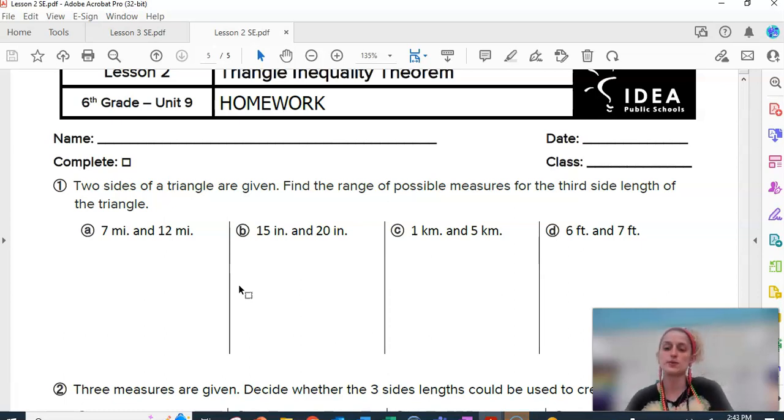which means that there should be a greater than symbol in every problem because they are not equal. We're trying to decide what this third side could be if you know that the smallest two sides have to be bigger than the third side, bigger than the biggest side.